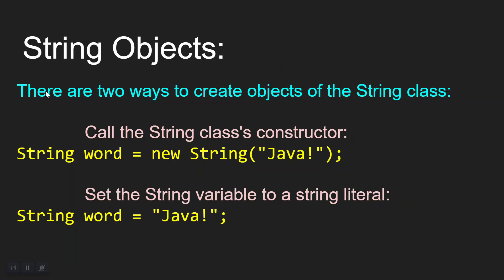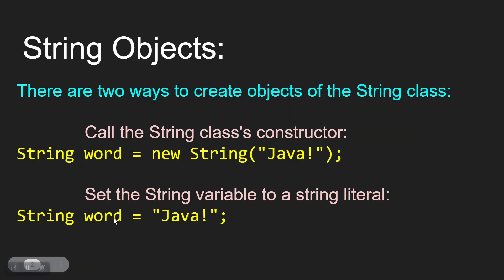So just a quick review here. Remember that there are two main ways to create objects of the string class. You can call the string class's constructor by saying string word equals new string, and then in parentheses and quotation marks, whatever you want to store as that string. You can also set the string variable to what's called a string literal, so you can just say string word equals Java. Both of these essentially do the same thing.